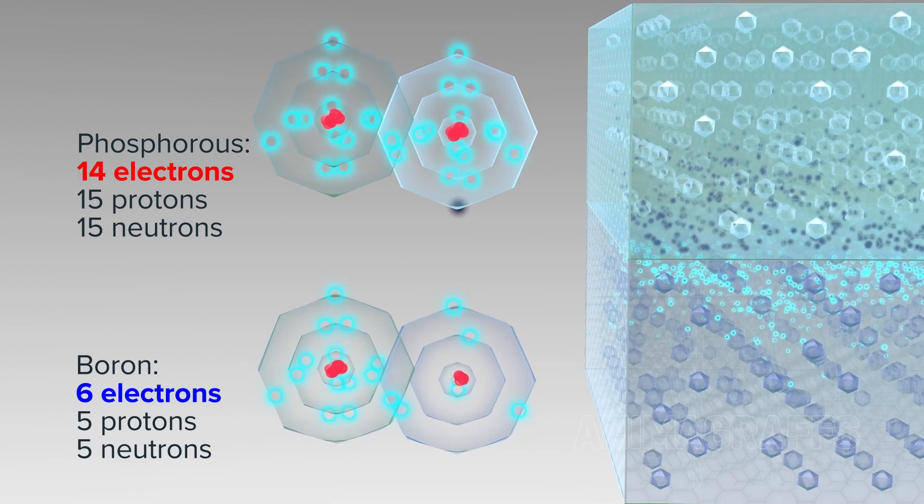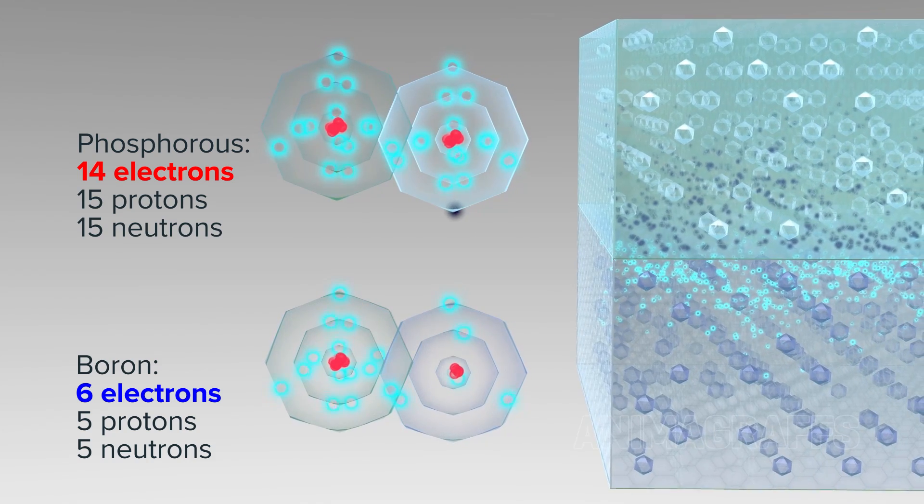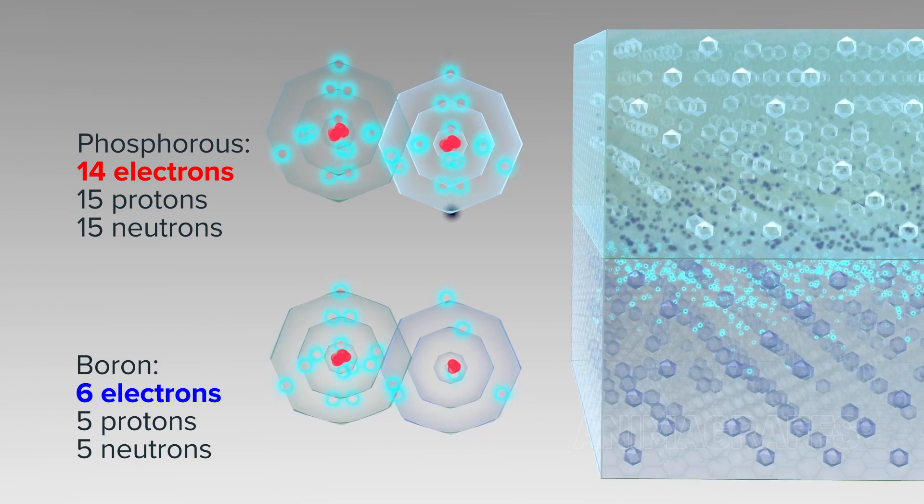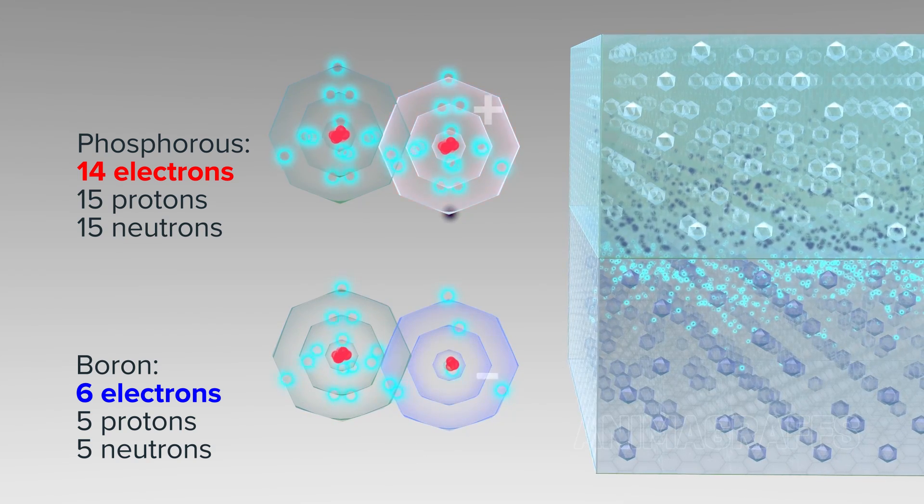When these electrons wiggle free and try to equalize, the imbalance creates special, electrically charged atoms with unequal electrons to protons, called ions.